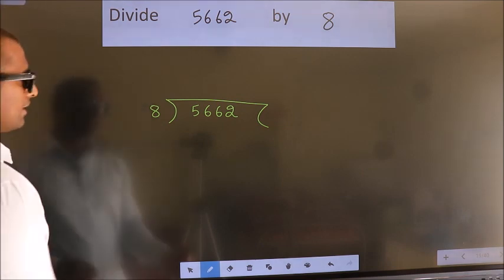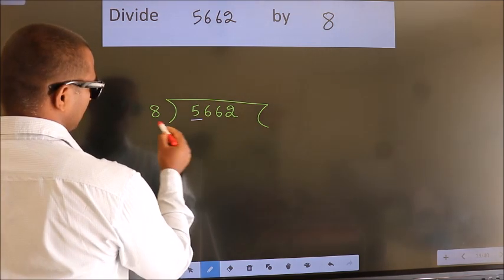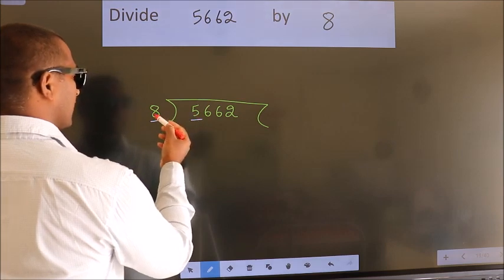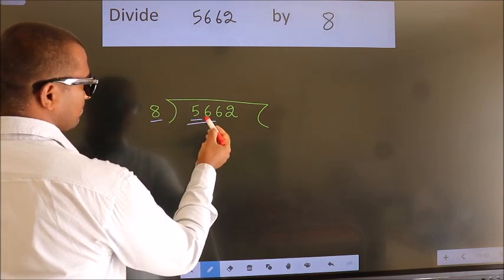Next, here we have 5, here 8. 5 is smaller than 8, so we should take two numbers: 56.